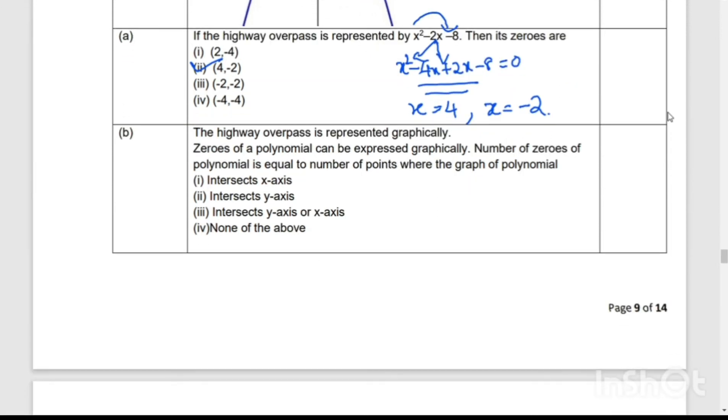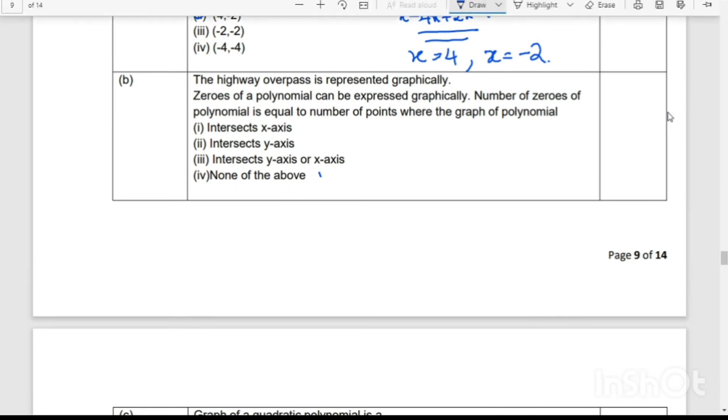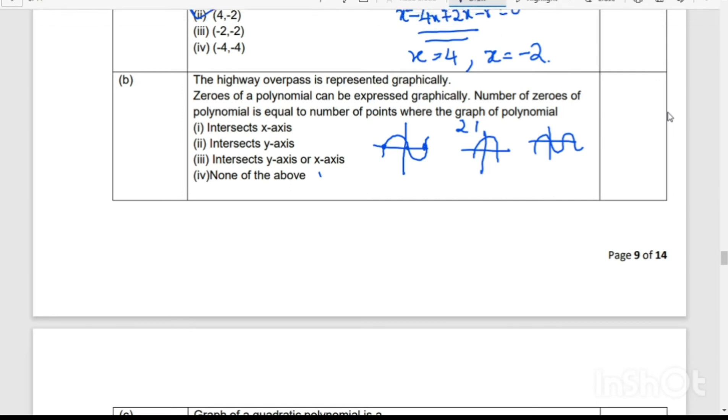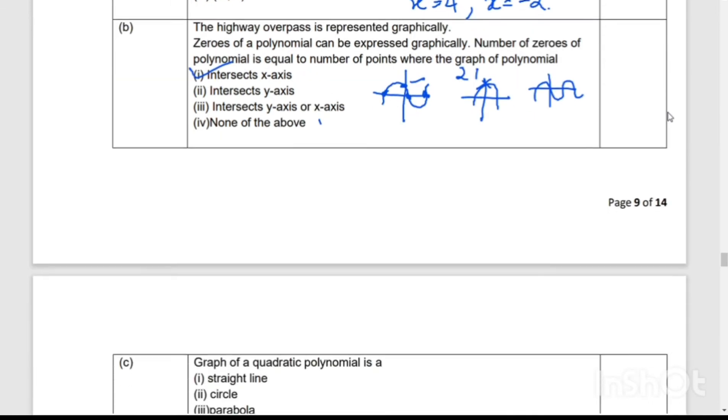Then second question (b): the highway overpass is represented graphically. Zeros of polynomial can be expressed graphically. Number of zeros of a polynomial is equal to number of points where the graph of the polynomial intersects. We will look out for the intersecting point only on x-axis, not on the y-axis. Though the curve intersects the y-axis, we don't take it as a zero; we take only on the x-axis. So answer here is intersects x-axis.